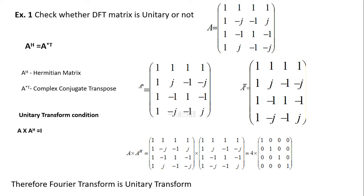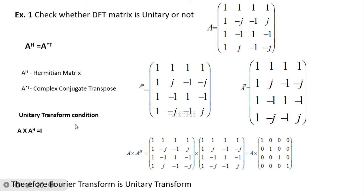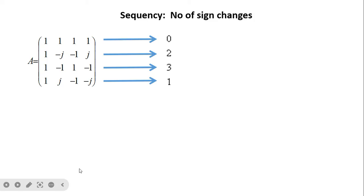When we factor out 4 from the product, we obtain 4·I. Multiplying the DFT matrix by 1/√4 and applying the operation yields the complete identity matrix. The normalization is needed to satisfy the unitary condition exactly. Therefore, the Fourier transform is a unitary transform.